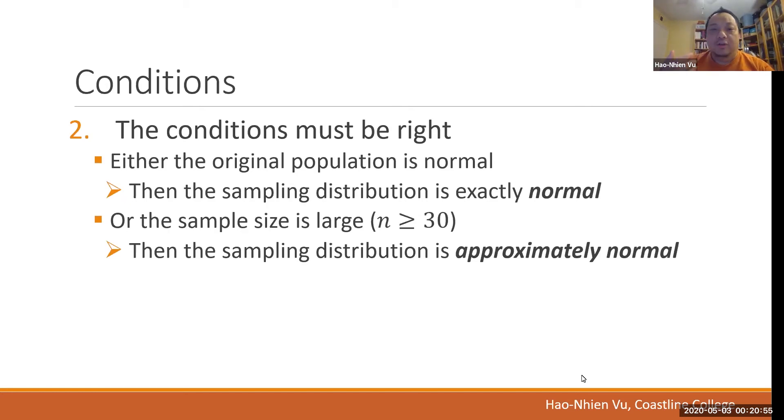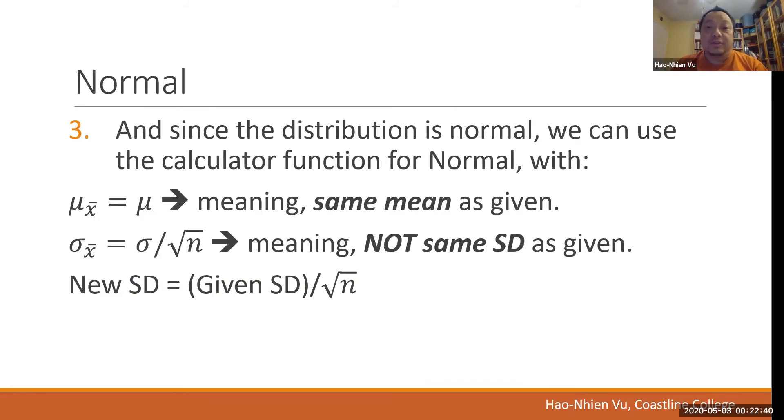They are either the original population is normal, in which case the sampling distribution is exactly normal, or the sample size is large. And our rule of thumb is 30 is considered large, in which case the sampling distribution is approximately normal. The good news is, that means as soon as one condition is met, we can use a normal function on our calculator or software. We just have to remember to compute a new standard deviation for use with the normal function.